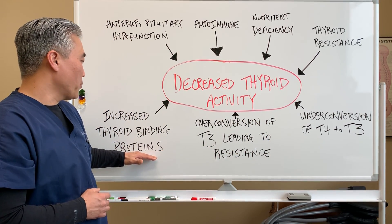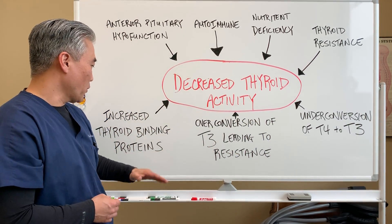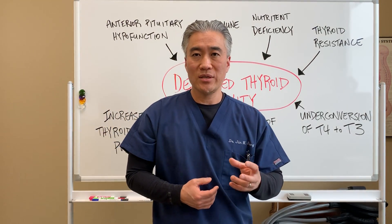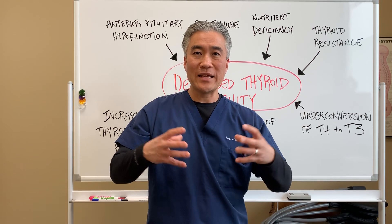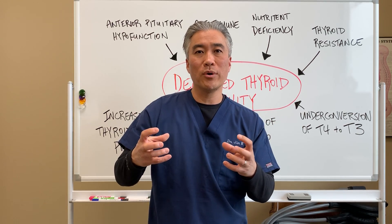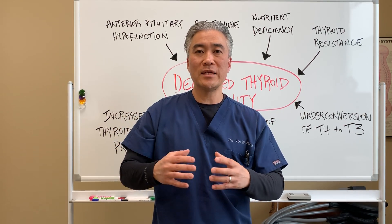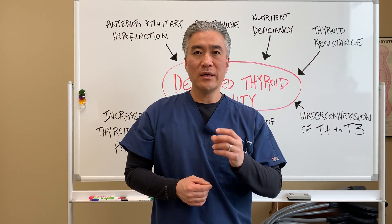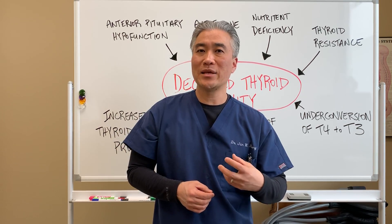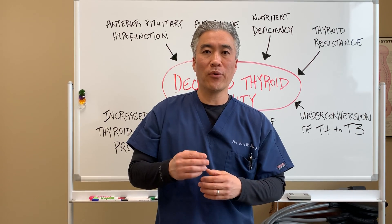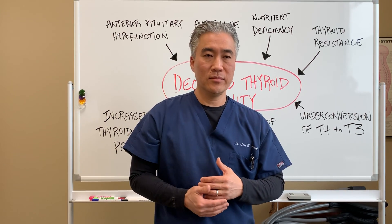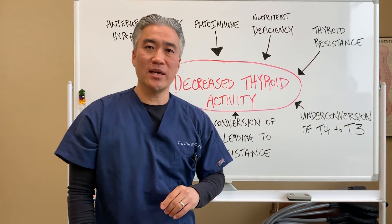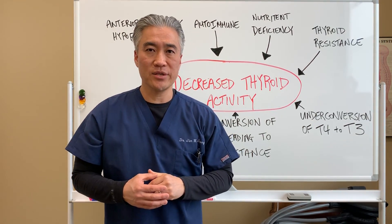Increased thyroid-binding globulins or thyroid-binding proteins: if the binding proteins circulating in your blood increase, they bind to the hormone and don't release it, thereby decreasing the actual circulating thyroid hormone. So an increase in thyroid-binding hormones can create a hypothyroid state. However, the number one cause in the United States is an autoimmune disease called Hashimoto's thyroiditis.